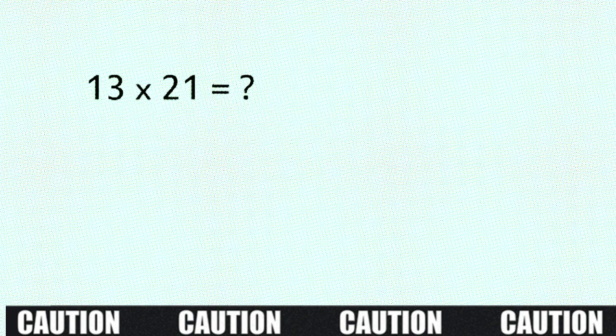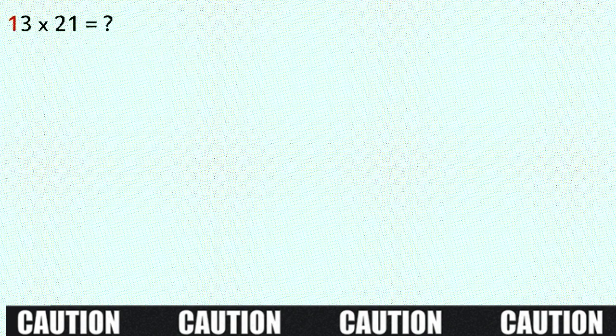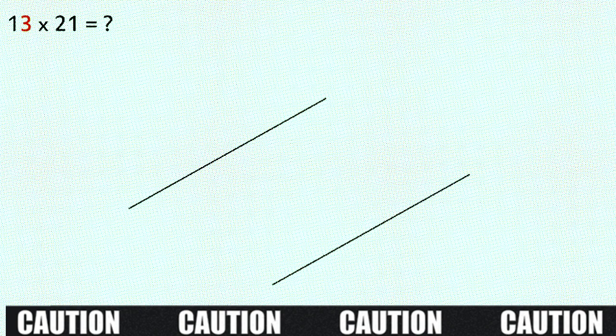As we can see the first digit in this equation is 1, which means we draw one straight line diagonally like this. The next digit is 3, so we leave a little space then draw three lines parallel to the first one like this.